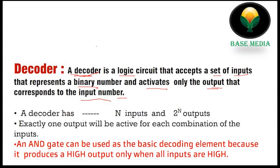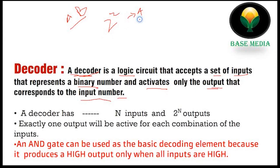It accepts a different set of inputs — for example, inputs A and B. From these inputs, we have 2 to the power of 2 combinations, giving us 4 combinations. So if you have two inputs, you get four outputs. The number of outputs will be equal to 2 to the power of n, where n is the number of inputs.